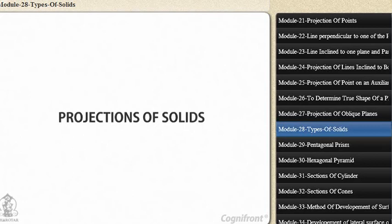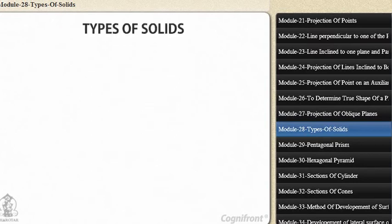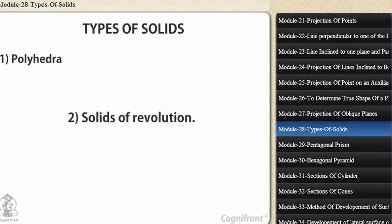Selections of solids, types of solids. Solids may be divided into two main groups: one, polyhedra, and two, solids of revolution.